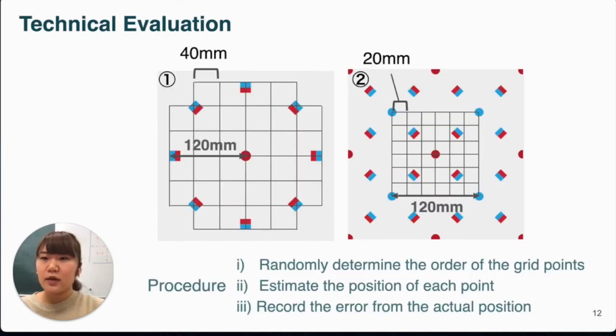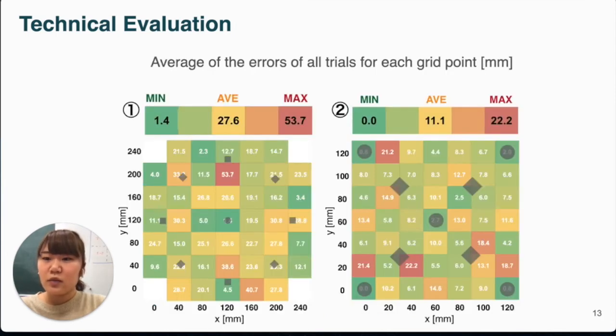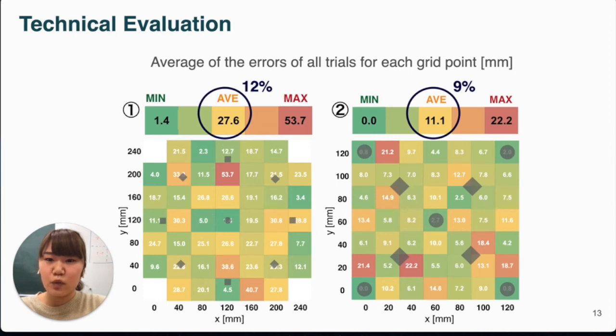We evaluated the accuracy of tracking for each of the two patterns. The distance between the estimated position and the actual position on each point was measured. The error for one side of the measurement area was 12% for pattern 1 and 9% for pattern 2.